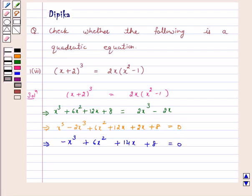When we solve this, we get -x³ + 6x² + 14x + 8 = 0.